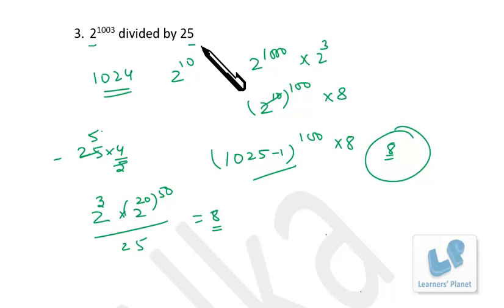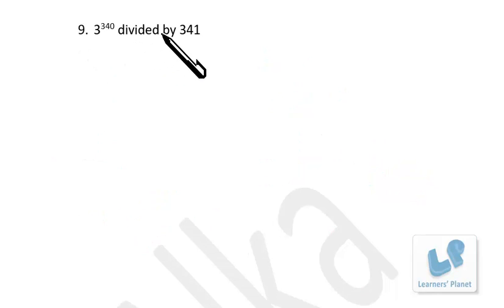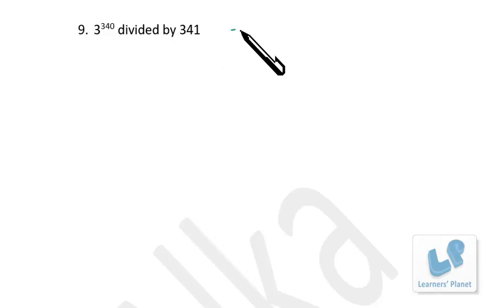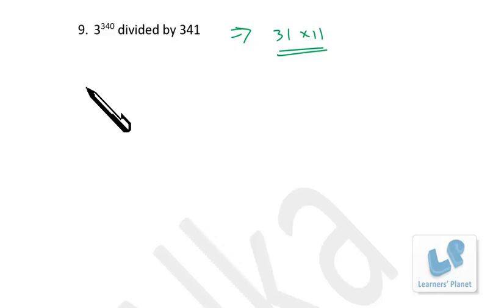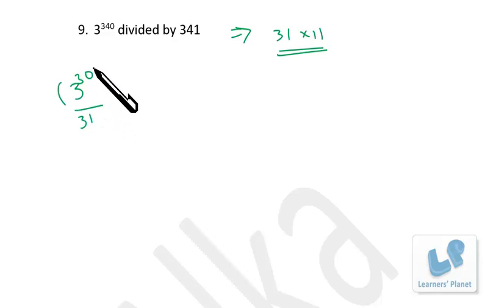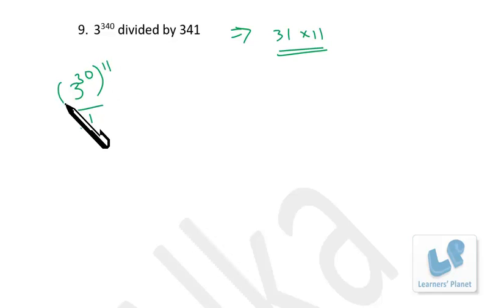Now let's solve: 3 raised to 340 divided by 341. Since 3 plus 1 is 4, and 4 minus 4 is 0, that means 341 is a multiple of 11, so it is precisely 31 times 11. Both 31 and 11 are prime numbers. By Fermat's little theorem, 3 raised to 30 when divided by 31 gives remainder 1, so this is 3 raised to 30 eleven times, which is 330.